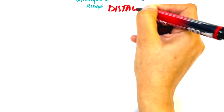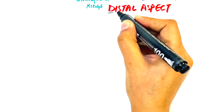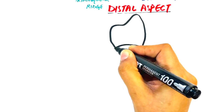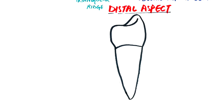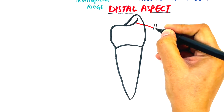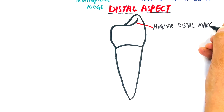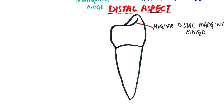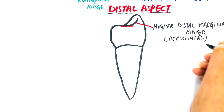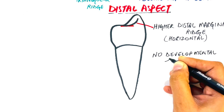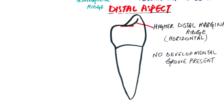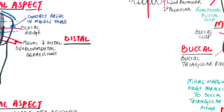On the distal aspect of the tooth, the outlines almost resemble the mesial aspect, except for a few differences. The distal marginal ridge is higher than the mesial marginal ridge, so the occlusal surface is not as visible from this aspect. The distal marginal ridge is more horizontal in position compared to the mesial marginal ridge. The cervical line is less curved, and no developmental groove is present on the distal aspect.